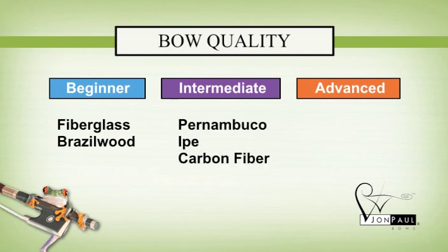Fiberglass and Brazil wood are standard for beginning students. Pernambuco, Ipe, and carbon fiber are appropriate for intermediate players. And advanced players will appreciate select Pernambuco and fine carbon fiber bows.